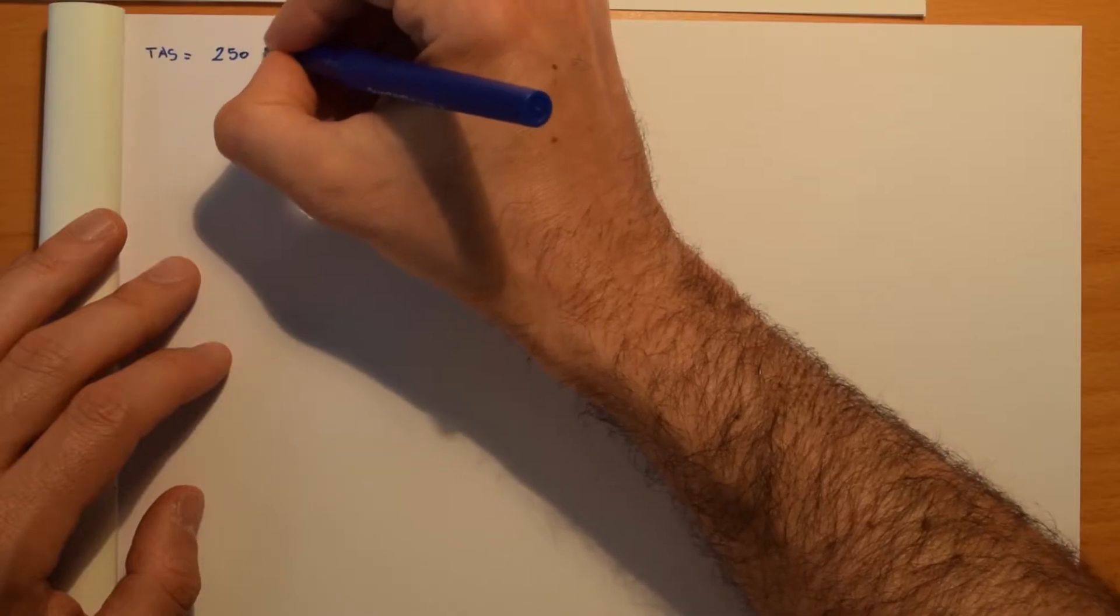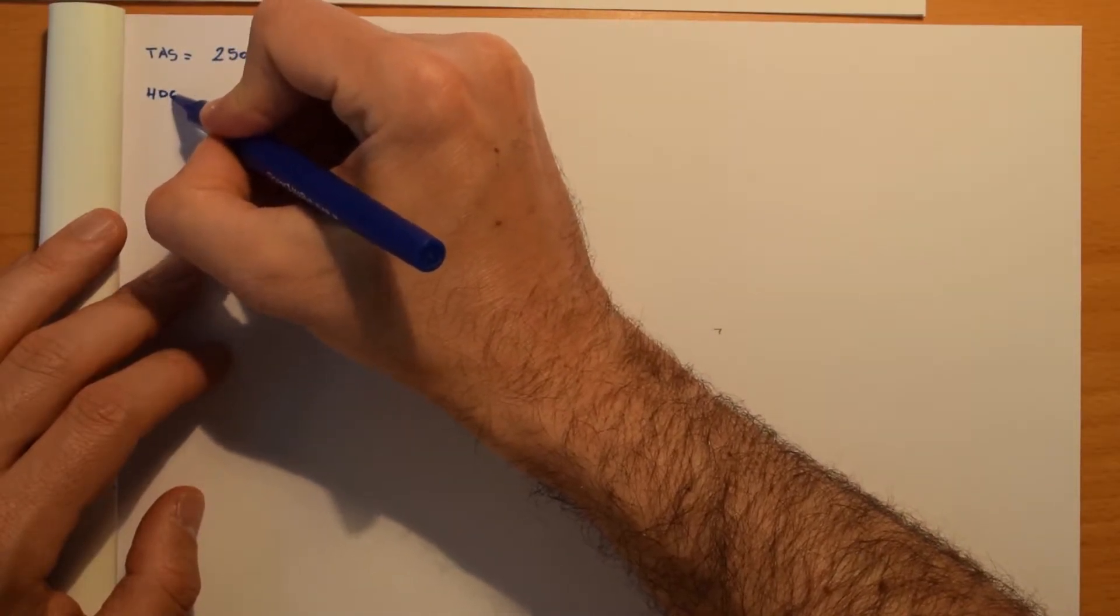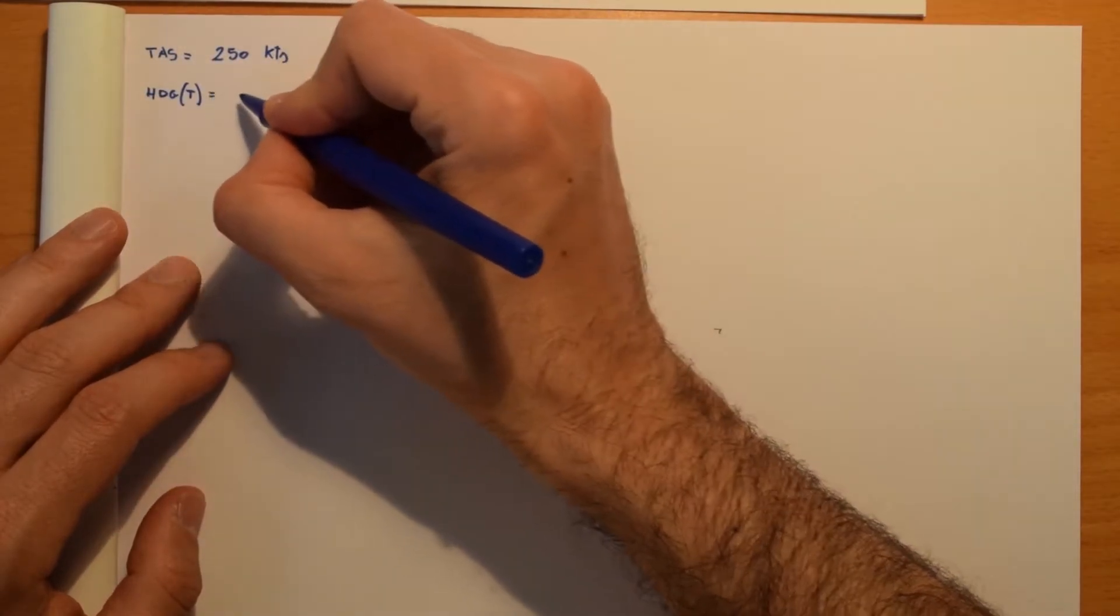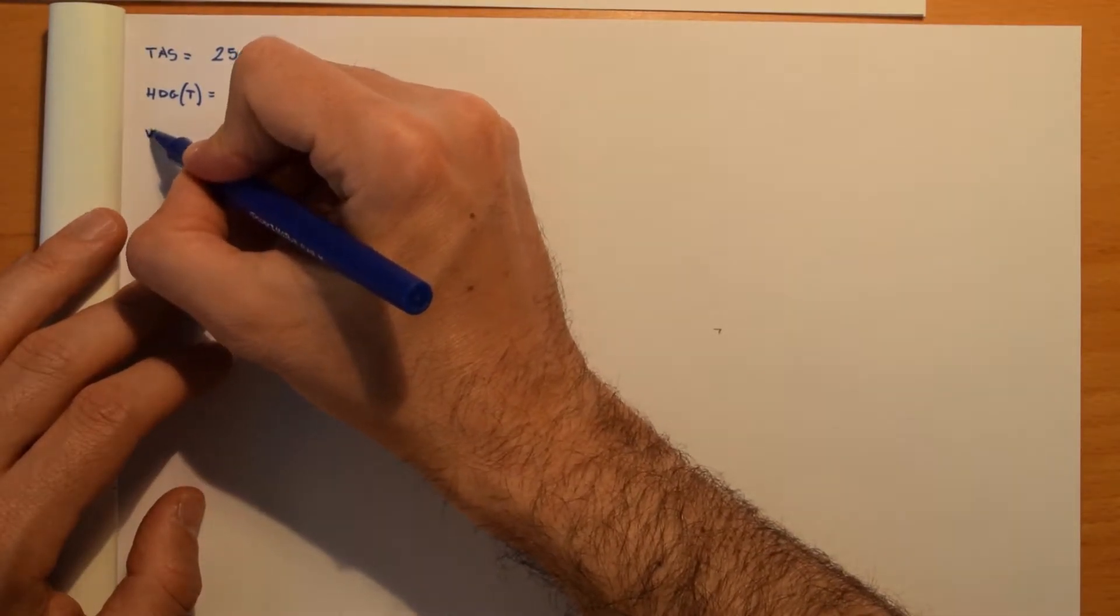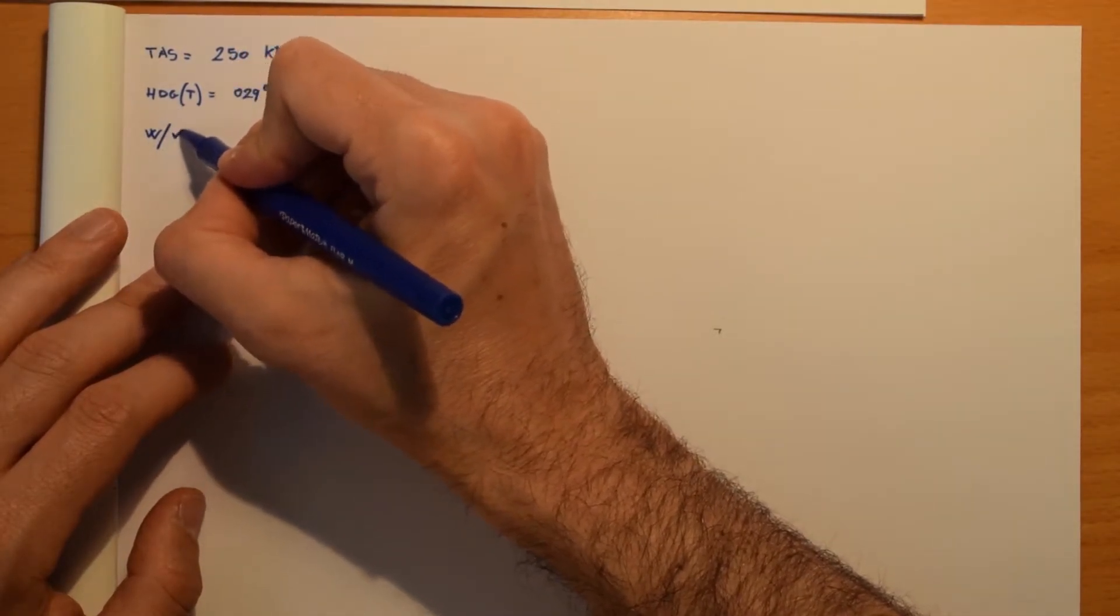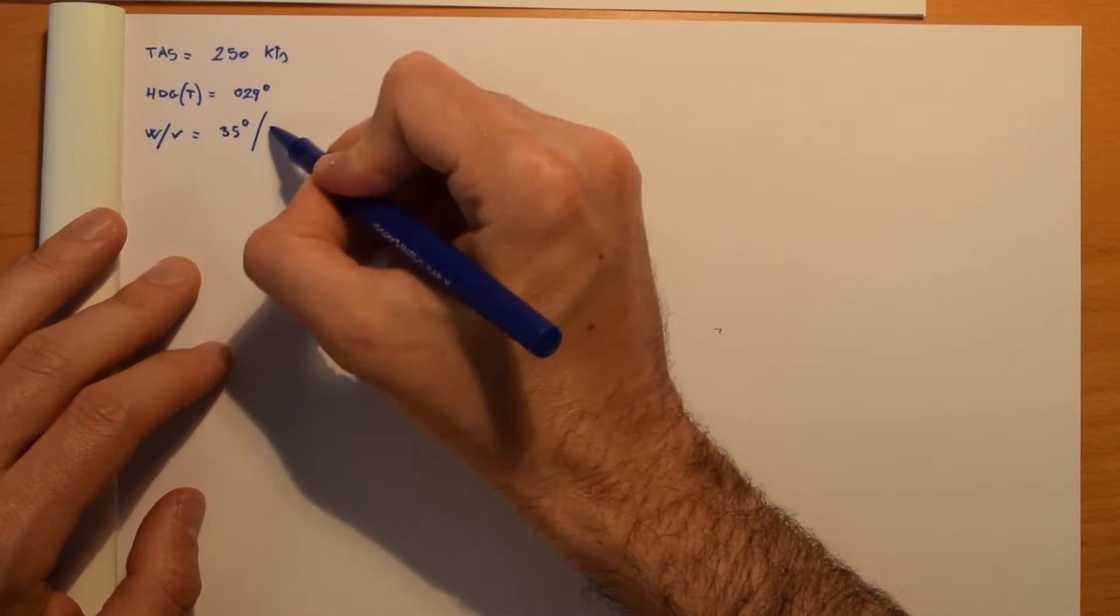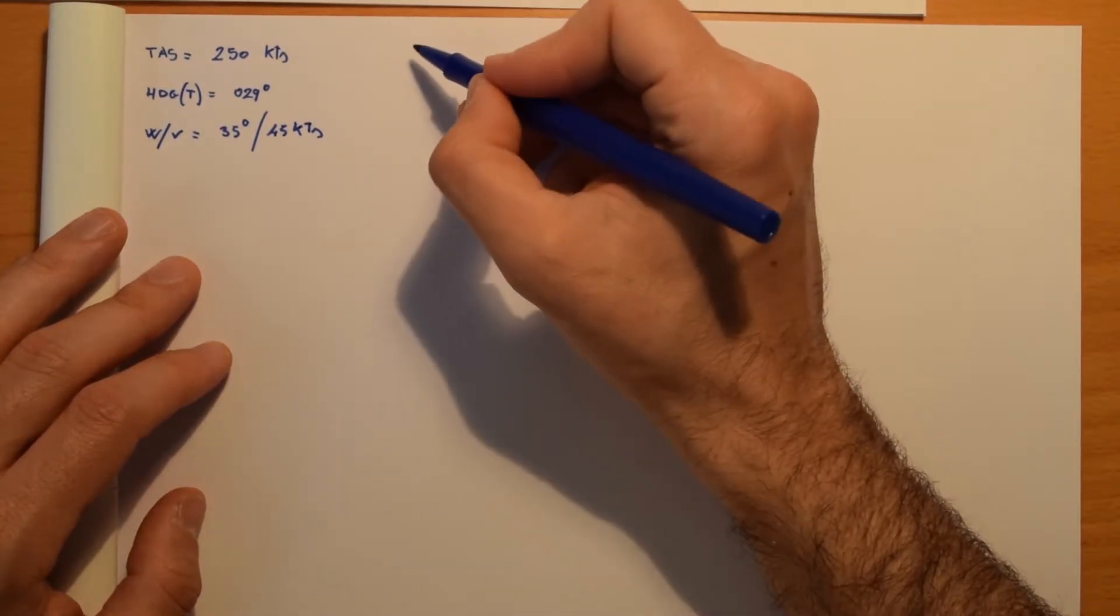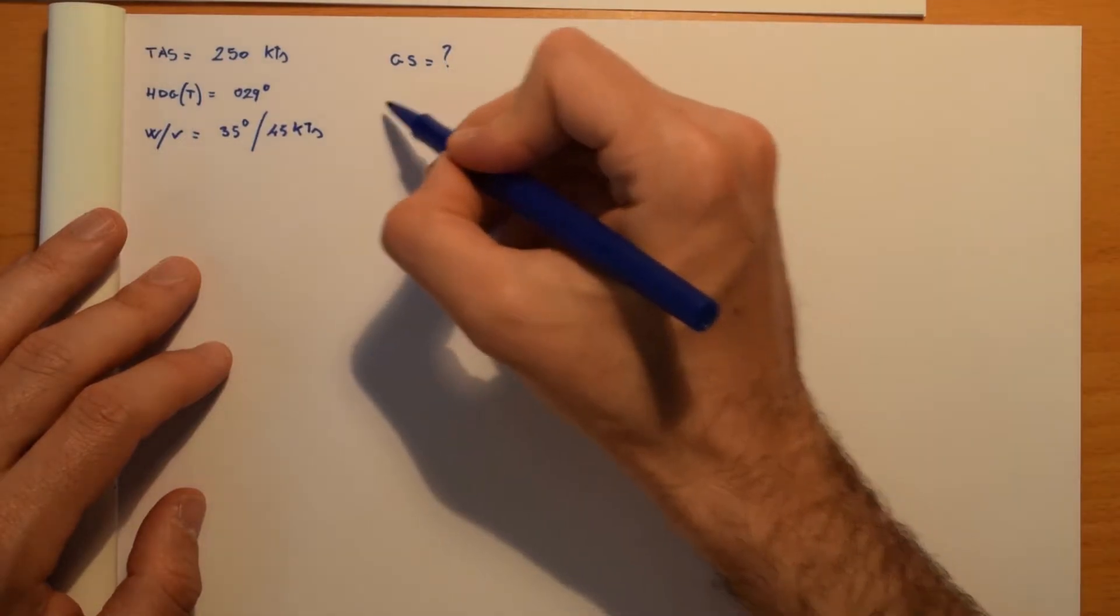Let's say TAS equals 250 knots, then we have heading, in this case we have true heading, so 029 degrees. Then we have the wind vector, so that is 035 degrees and 45 knots, and they are going to ask you ground speed and drift.